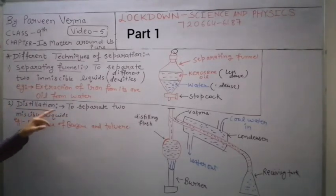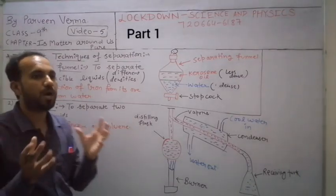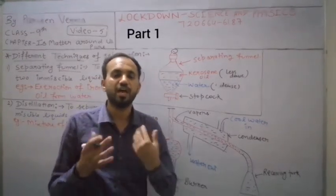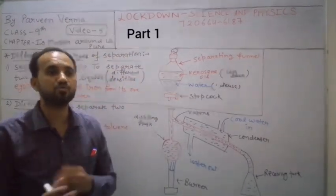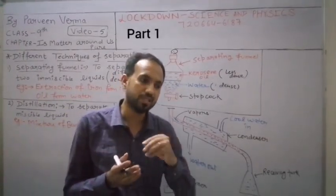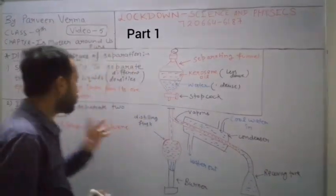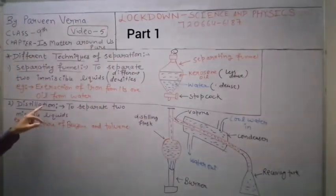The second method is called distillation. Distillation is used to separate two miscible liquids. Miscible liquids means liquids that mix completely with each other - you cannot see them as separate. For example, milk contains water, but you cannot tell where the milk is and where the water is.